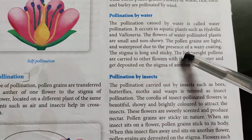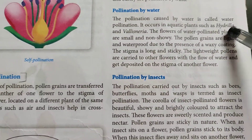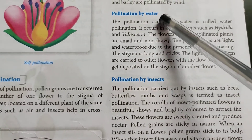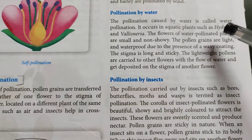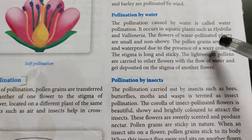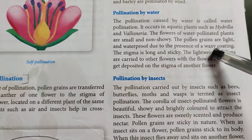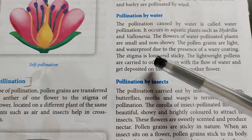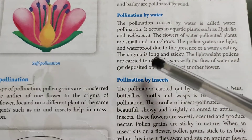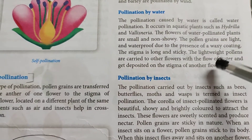Water-pollinated plants: plants which grow in water — aquatic plants such as Hydrilla and Vallisneria — are pollinated by water. The flowers of water-pollinated plants are small and non-showy, but the pollen grains are light and waterproof due to the presence of a waxy coating. The stigma is long and sticky, and these light pollen grains are carried along with the flow of water and deposited on the stigma of another flower.